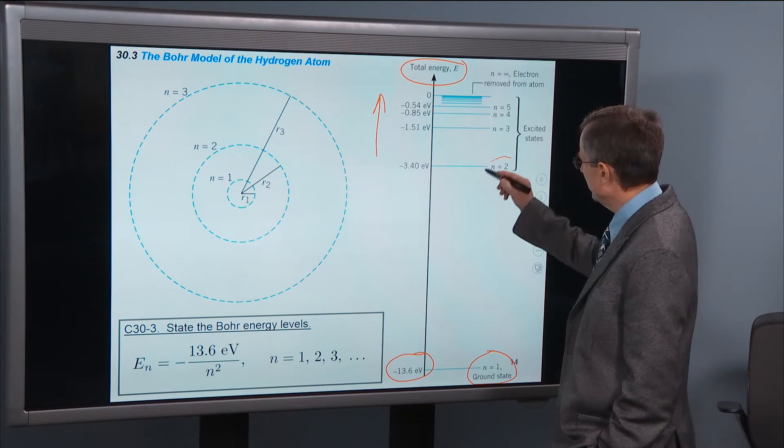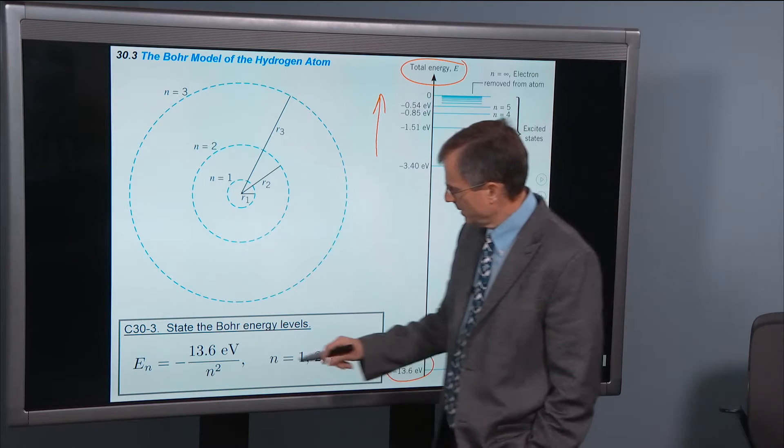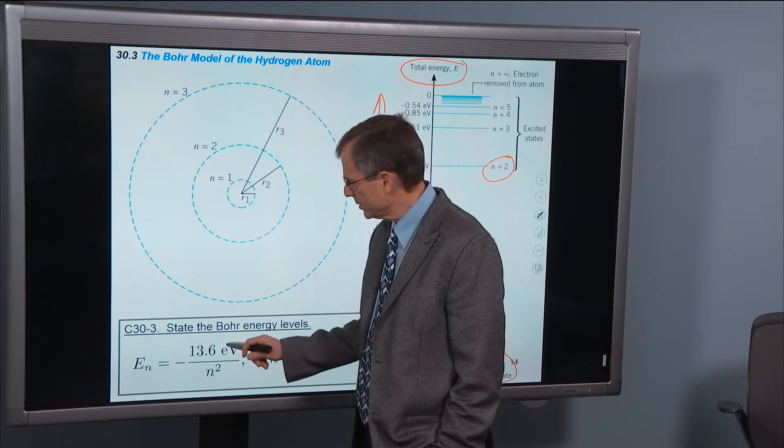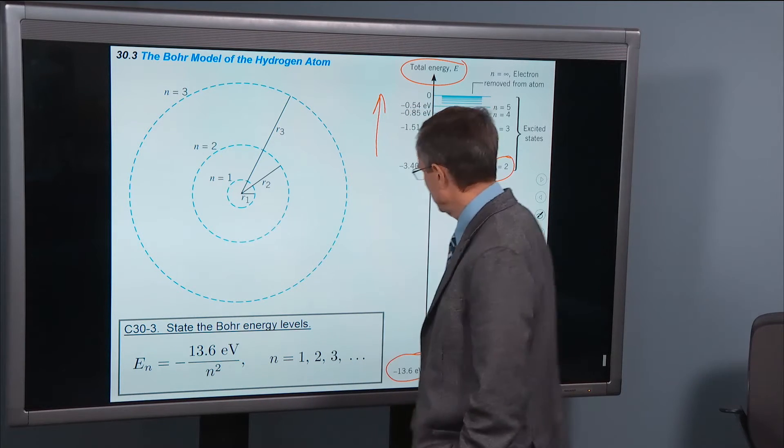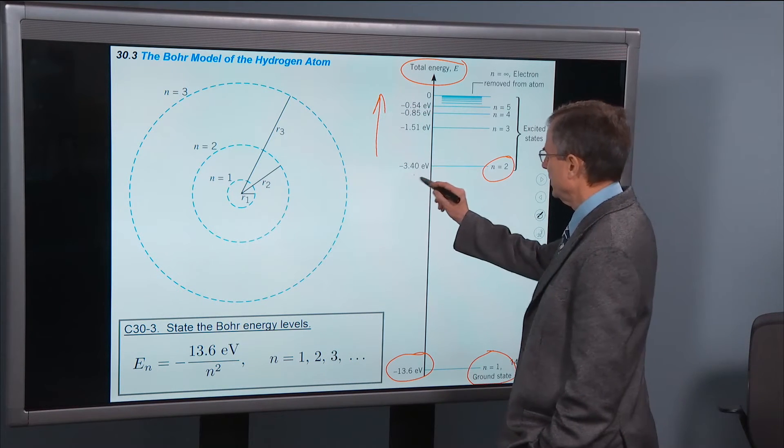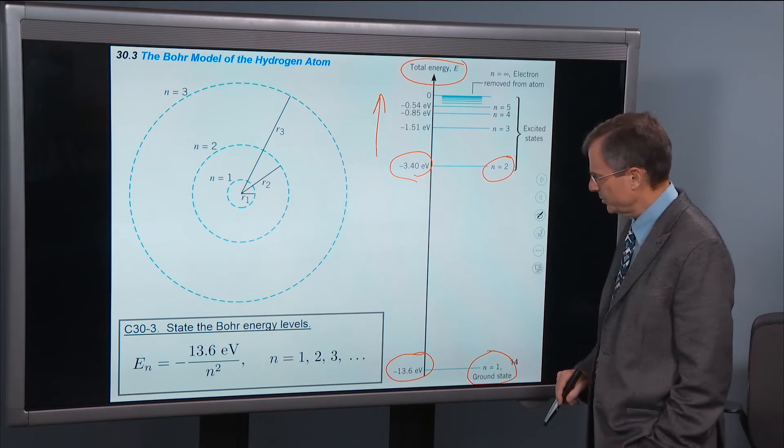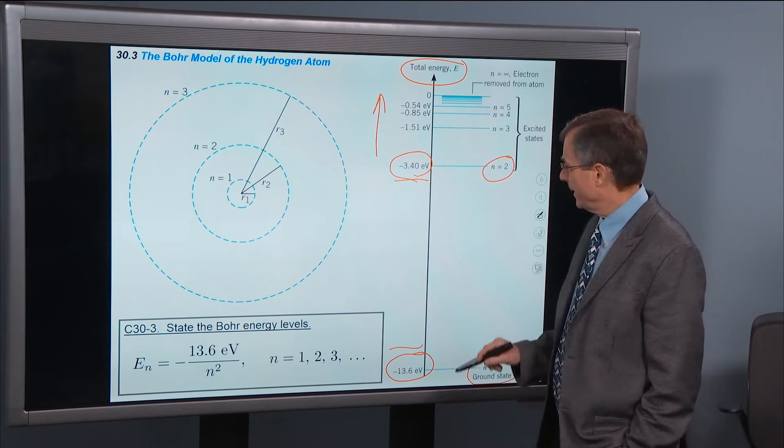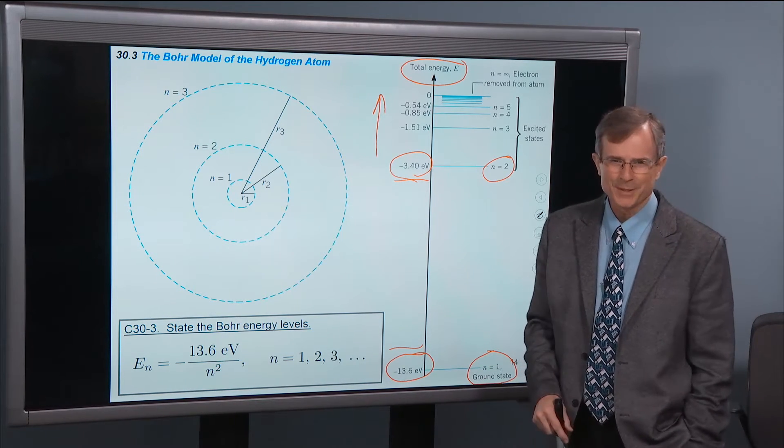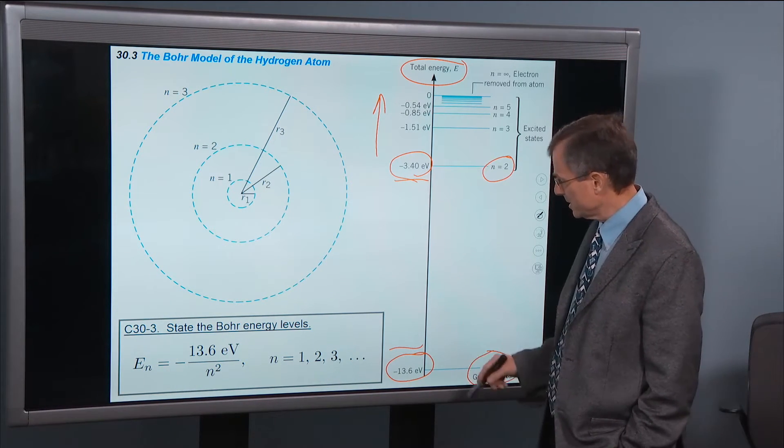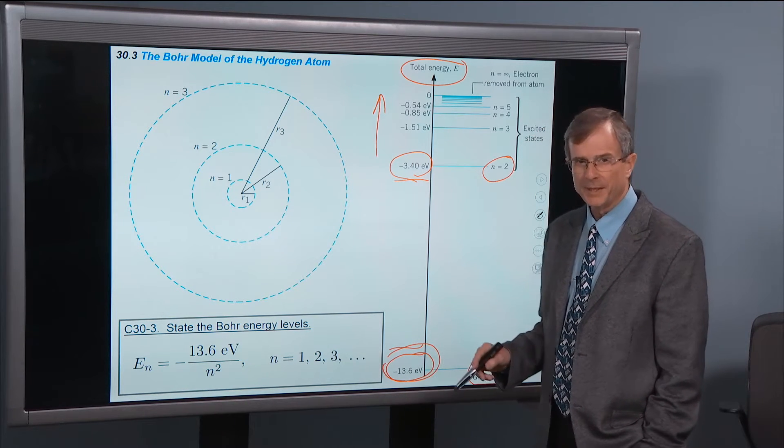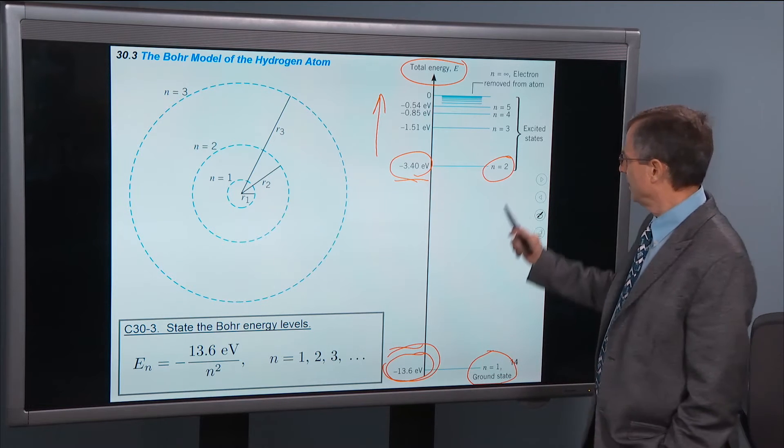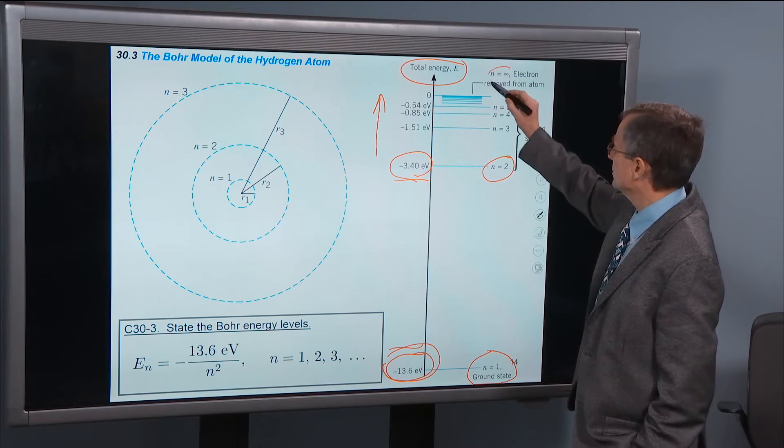As we plug in bigger values of n, if we plug in n equals 2, then we'll have 2 squared here, which is 4. So we'll have minus 13.6 eV divided by 4. So that's going to be 3 point something, and sure enough, that's the energy level. Now this energy level is higher than this one. And that's because we're talking about negative numbers here. So if these were positive numbers, this guy would be the bigger one, but we've got negative numbers. So as n increases, n equals 2, 3, 4, 5, let's look at n equals infinity.